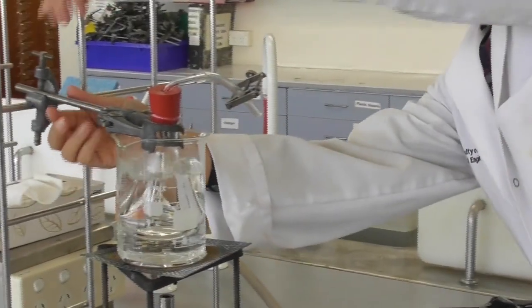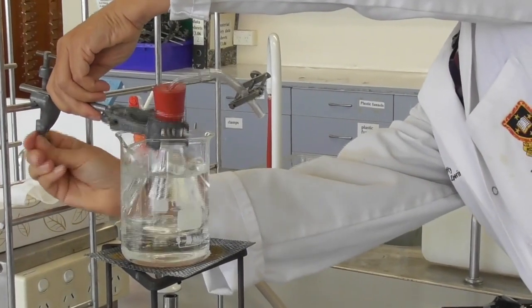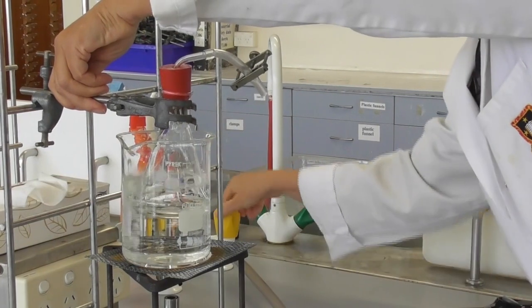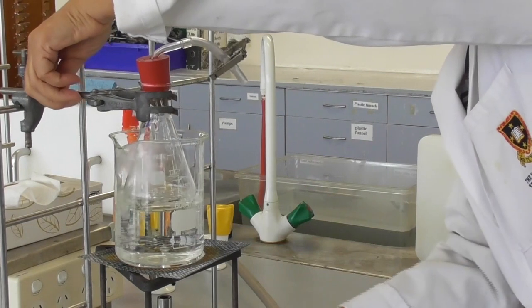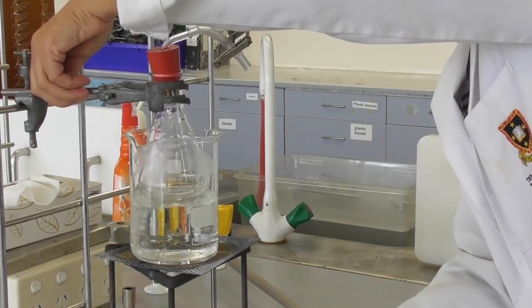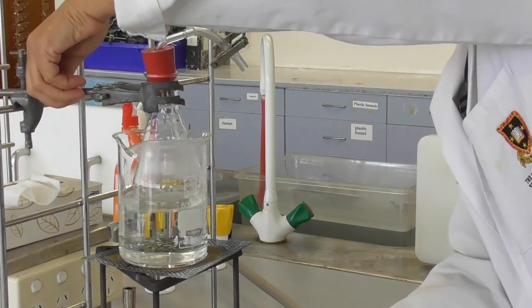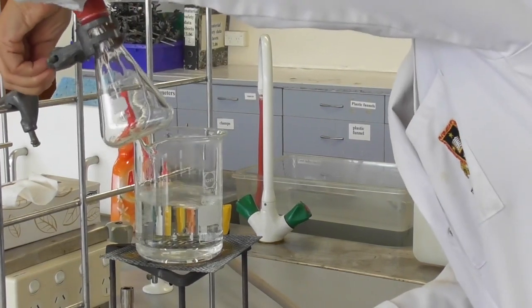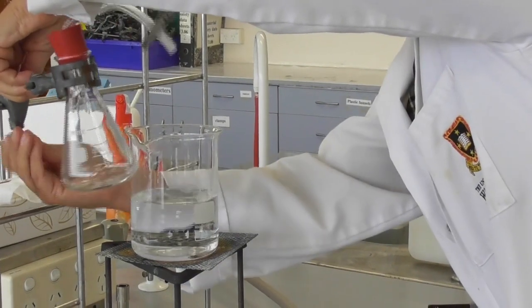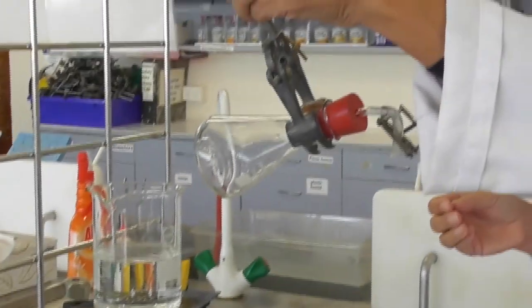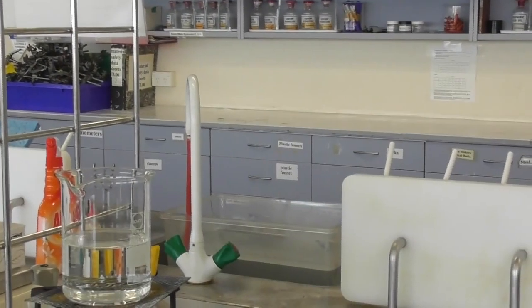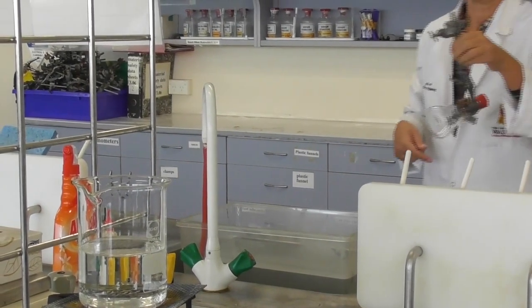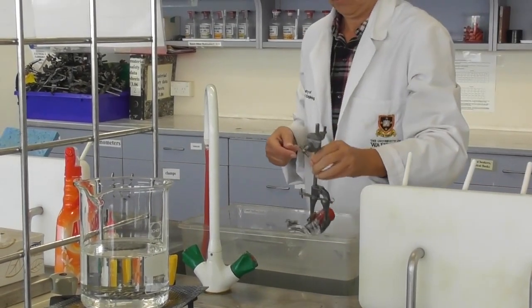Then we have to disassemble our apparatus. Ideally we turn off the gas first and it's best to take the whole setup, the clamp including the flask, out of the boiling water and take it to the sink where we have a container with cold water where we submerge the flask completely.